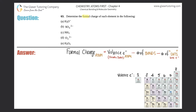Number 63: determine the formal charge of each element in H₃O⁺. We did a very similar problem in number 62, so if you want a more in-depth version go back to that one. This one will be a quick version. There are two things you need to know to determine formal charge: first, how to draw a perfect Lewis structure. If you're not strong in Lewis structures, go back to questions starting around number 40 where we do a lot of them.